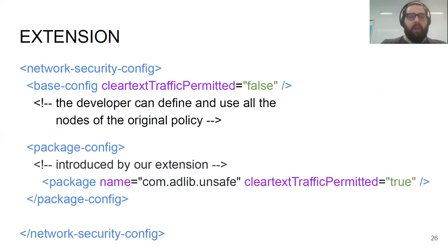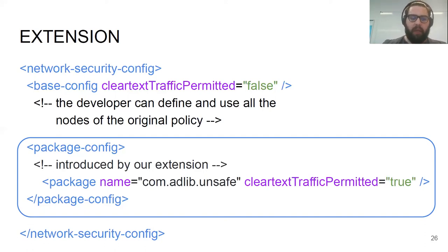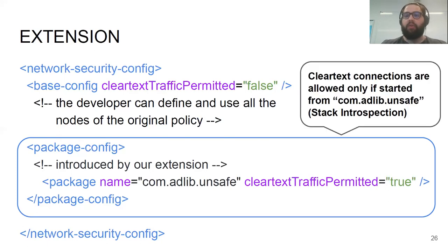How does it work? The developer can still configure a very strict policy — for example, completely forbid HTTP connections for the entire application. However, when the developer needs to embed a third-party library, they can use the package-config attribute we extended, introducing this new extension of the network security policy. Within this node, it is possible to configure specific package names and whether they allow clear text or not. This means clear text connections are only allowed if they are initiated from a specific package name — in this case, the unsafe package name. We perform the match to understand who started the connection thanks to stack introspection.